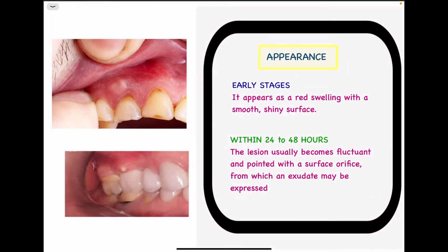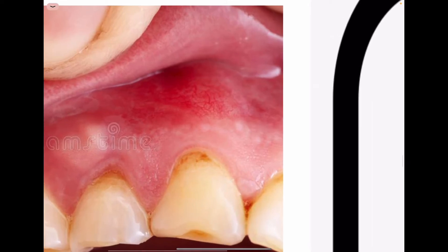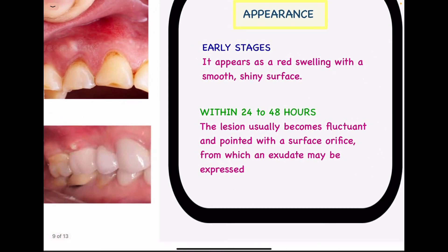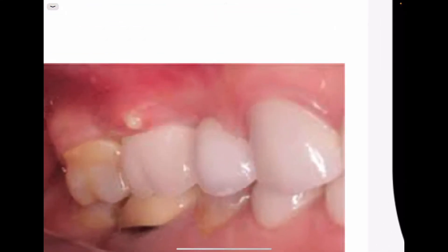Talking about its appearance: in the early stages, it will appear as a red swelling with a smooth and shiny surface. Within the next 24 to 48 hours, the lesion will usually become fluctuant. This fluctuation is mainly because of the accumulation of pus — WBCs will be recruited and there will be a battle, but it requires some time for the body to recruit WBCs to the site of infection. Therefore, within 24 to 48 hours, it forms a full phlegmopsis. It becomes fluctuant, somewhat pointed, and will have a surface orifice from which there is exudation of pus.